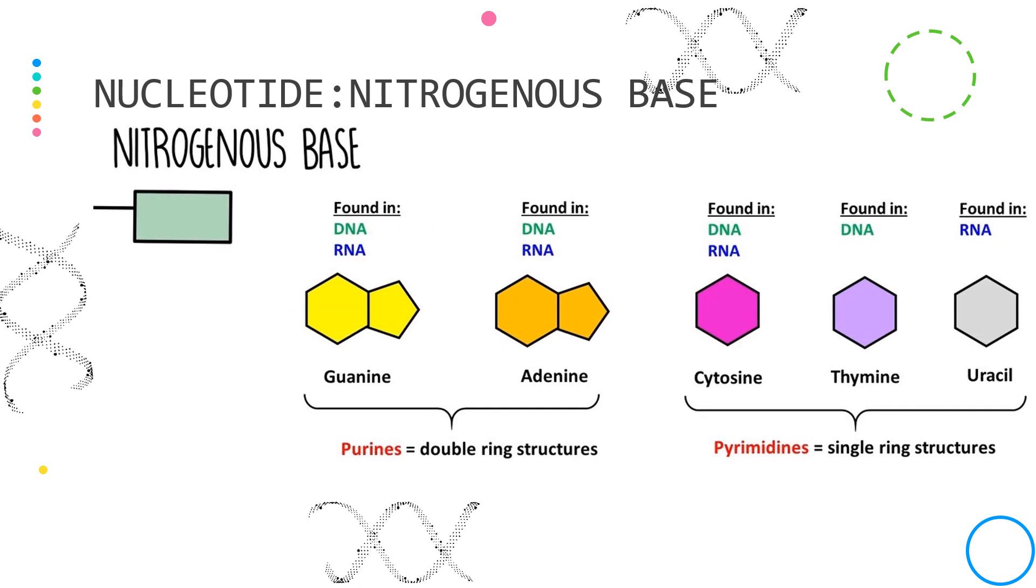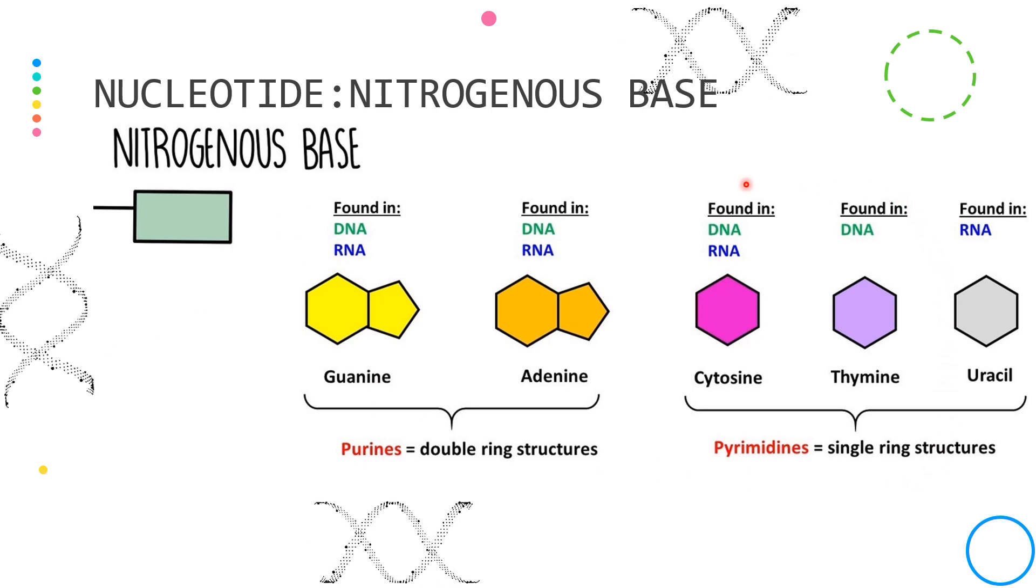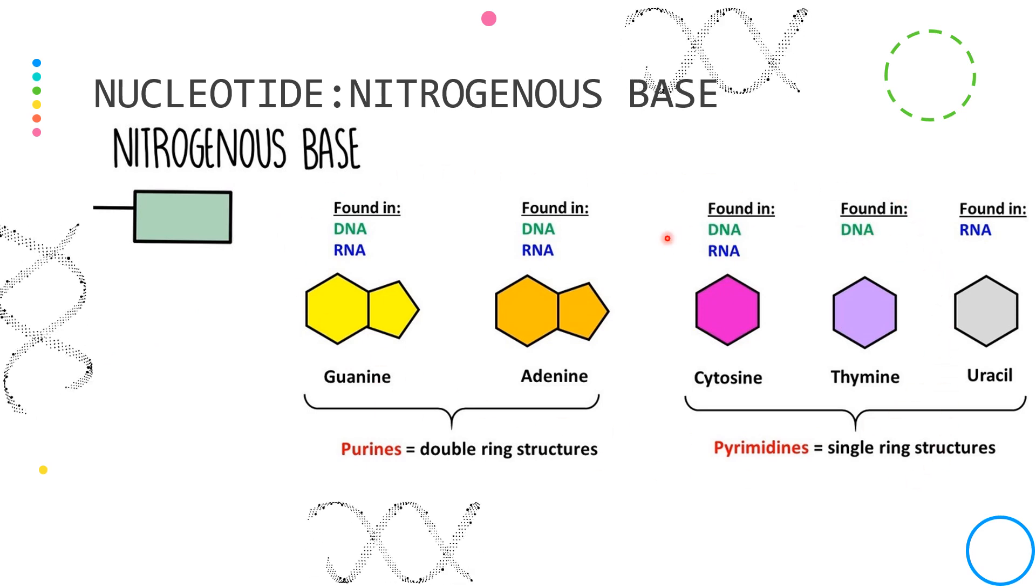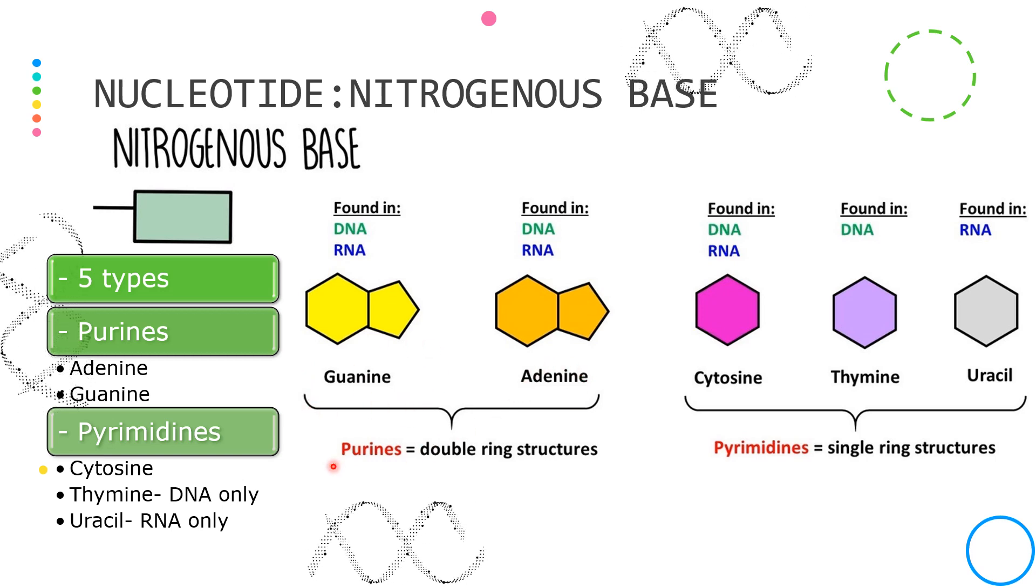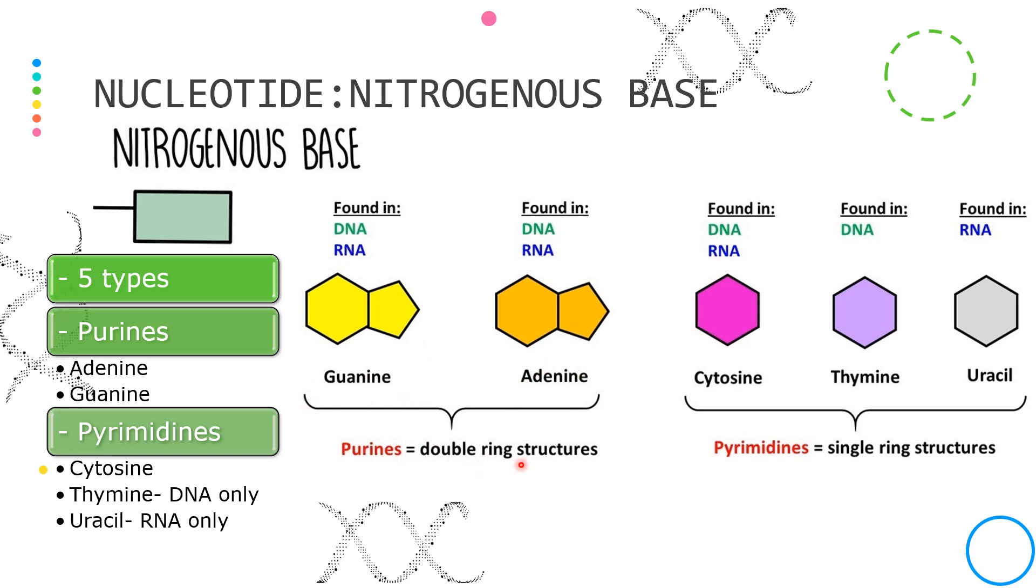There are five types of different nitrogenous bases, but only four of them are found in DNA. Guanine and adenine are classified as purines, which are double ring structures.